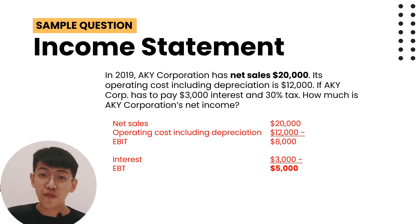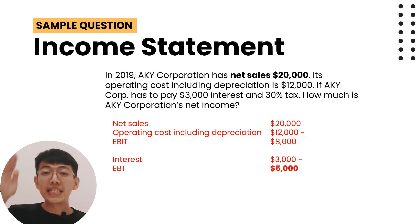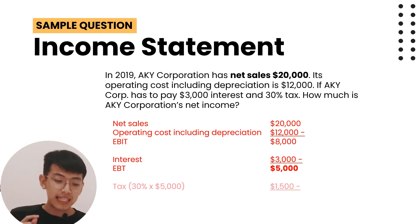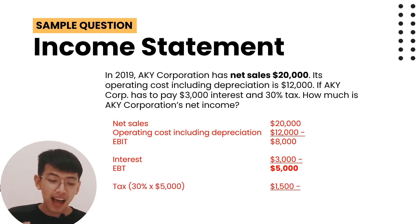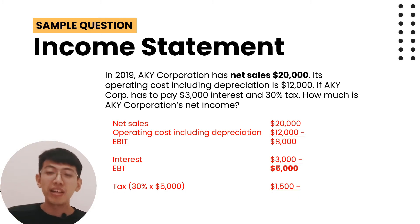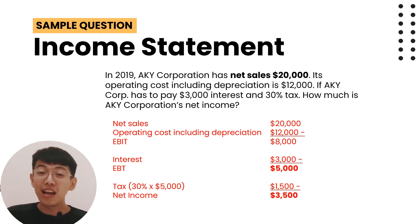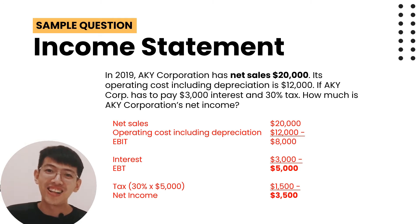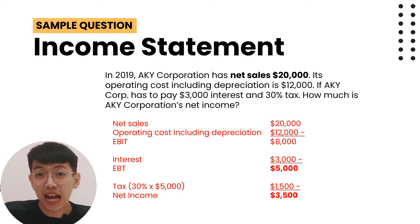Now let's find the net profit. Tax equals 30% times EBT: 30% times 5,000 equals 1,500 dollars. So net income equals EBT minus tax: 5,000 minus 1,500 equals 3,500 dollars. Nice, you can find it!